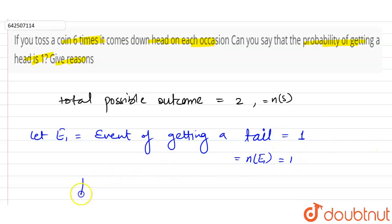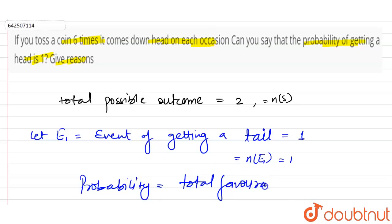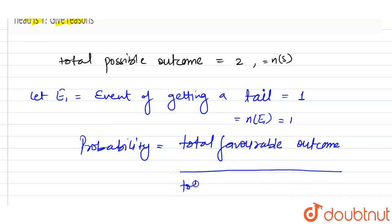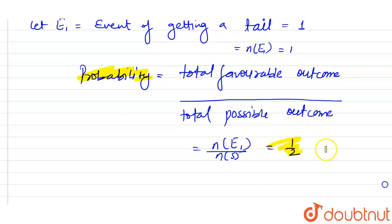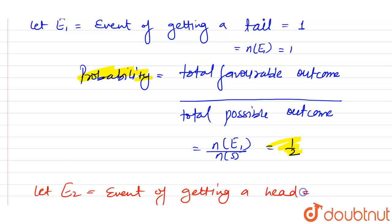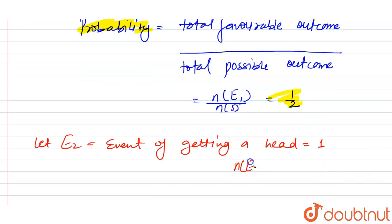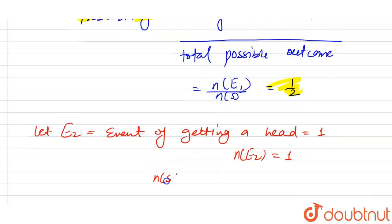We know that probability equals total favorable outcomes divided by total possible outcomes. So P(tail) = n(E1) / ns = 1/2. Similarly, let Event 2 be the event of getting a head. n(E2) = 1 and ns = 2.